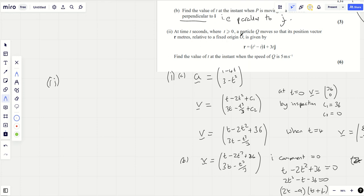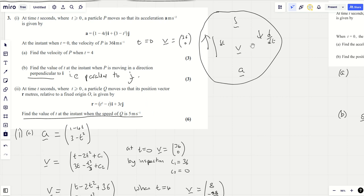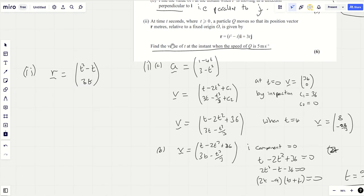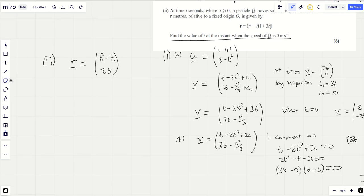Part two. At time T seconds, where T is greater than or equal to zero, a particle Q moves at its position vector. R meters relative to an origin is given by R equals T squared minus T for the I component and 3T for the J component. Find the value of T at the instant when the speed of Q is 5. So firstly we'd better find the velocity. And if you look here, to go from displacement to velocity, we need to differentiate. This is displacement, they didn't call it S, but R is position vector.